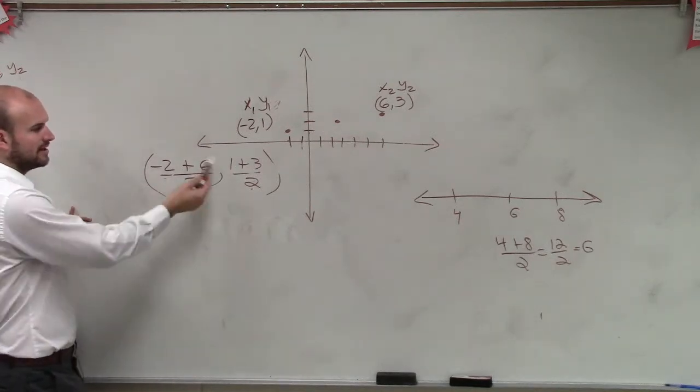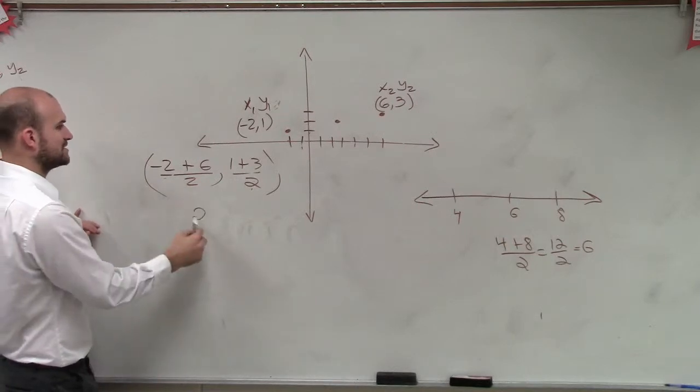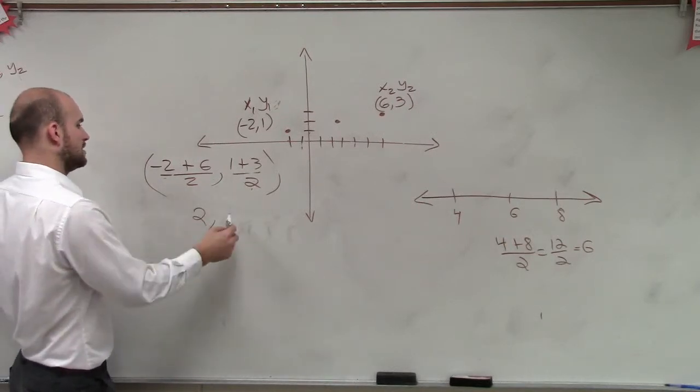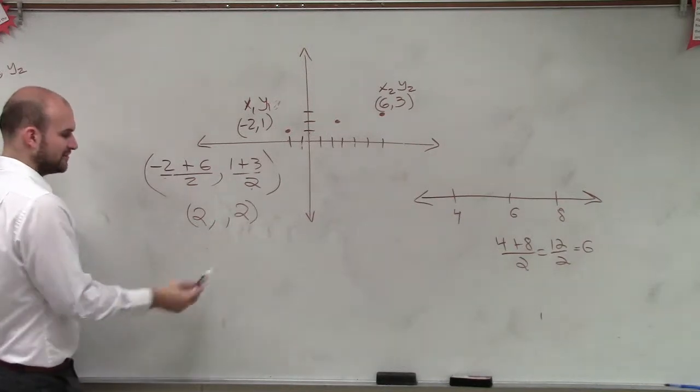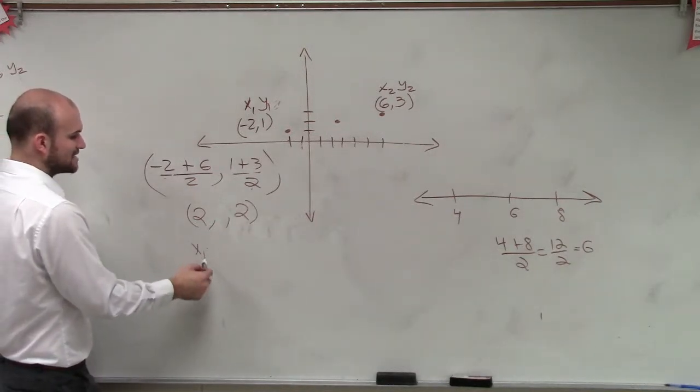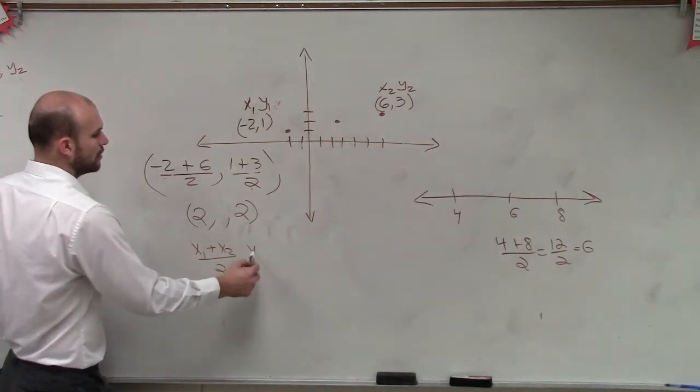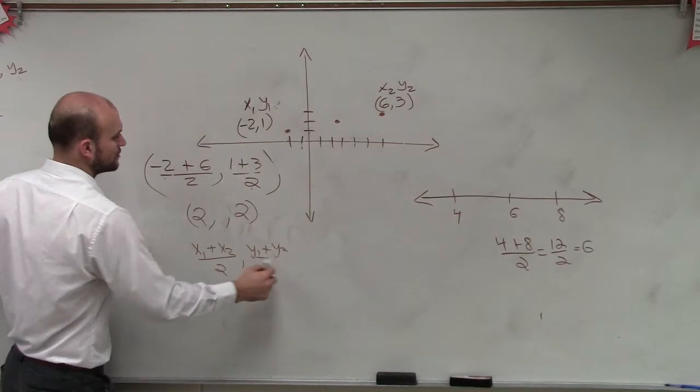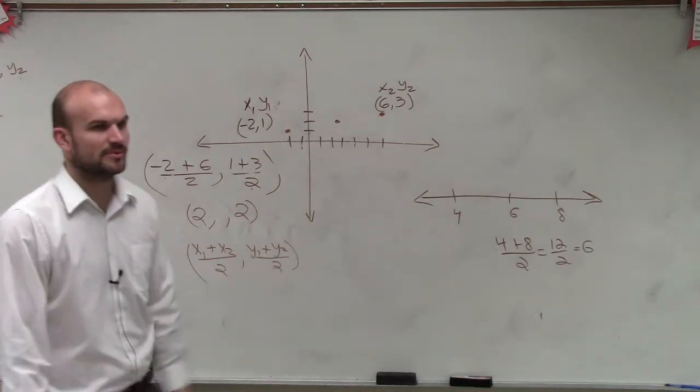So the midpoint formula, in this case, you're going to have, let's say that'd be 4, so it's going to be 2, comma, 2. But the formula you guys need to use is x1 plus x2 divided by 2, comma, y1 plus y2 divided by 2. So that's the formula for the midpoint formula.